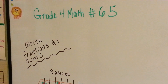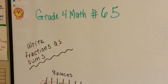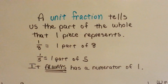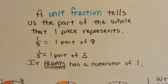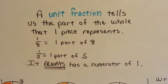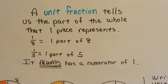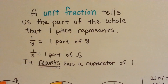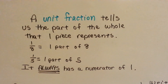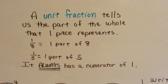Grade 4 math number 65: write fractions as sums. We're going to talk about unit fractions. A unit fraction tells us the part of the whole that one piece represents. 1 eighth is equal to 1 part of 8. 1 fifth is 1 part of 5. It always has a numerator of 1 — that's what makes it a unit fraction.